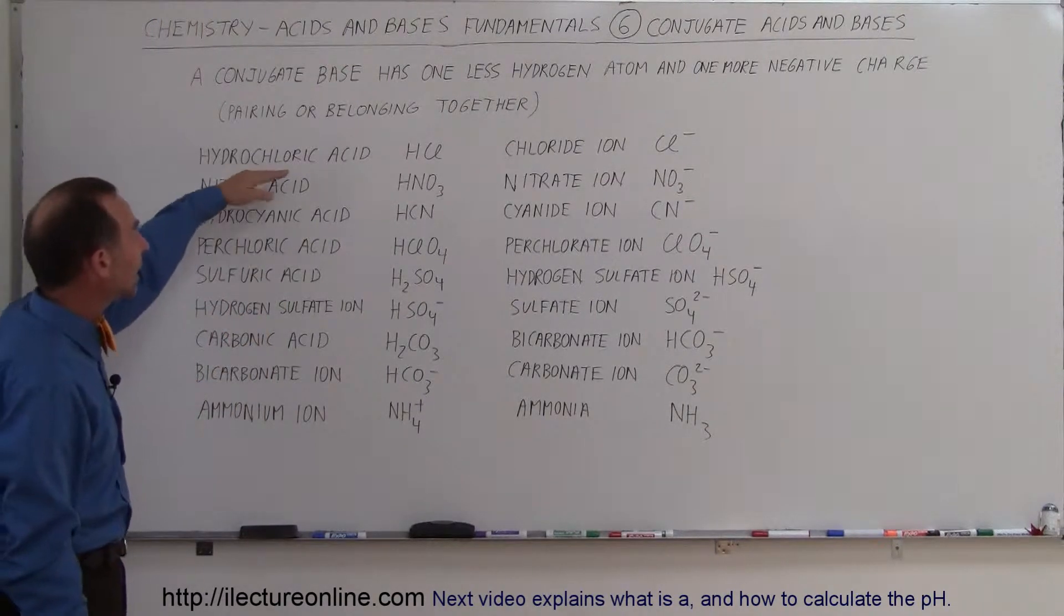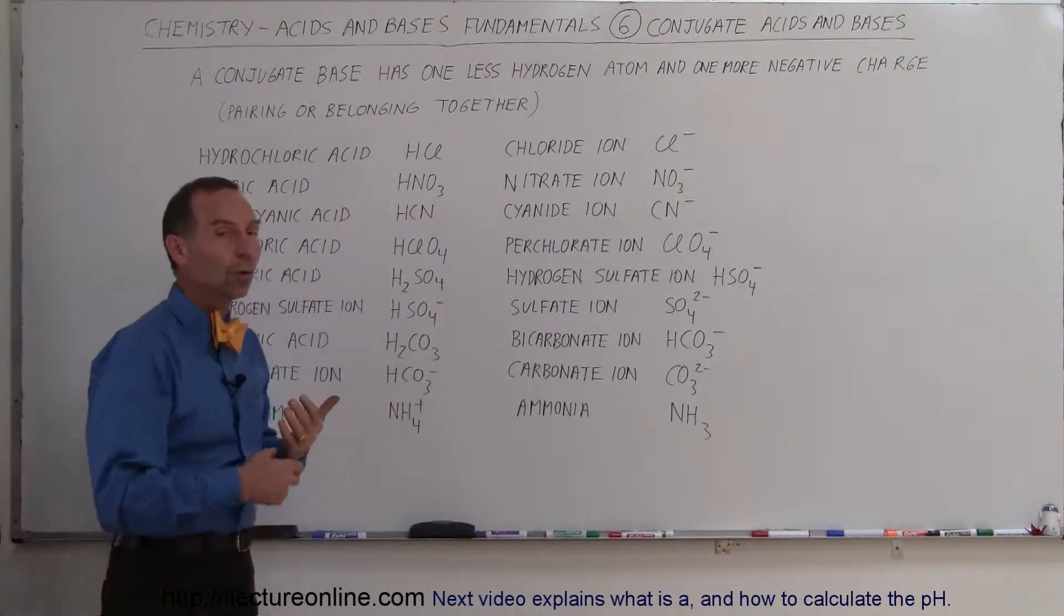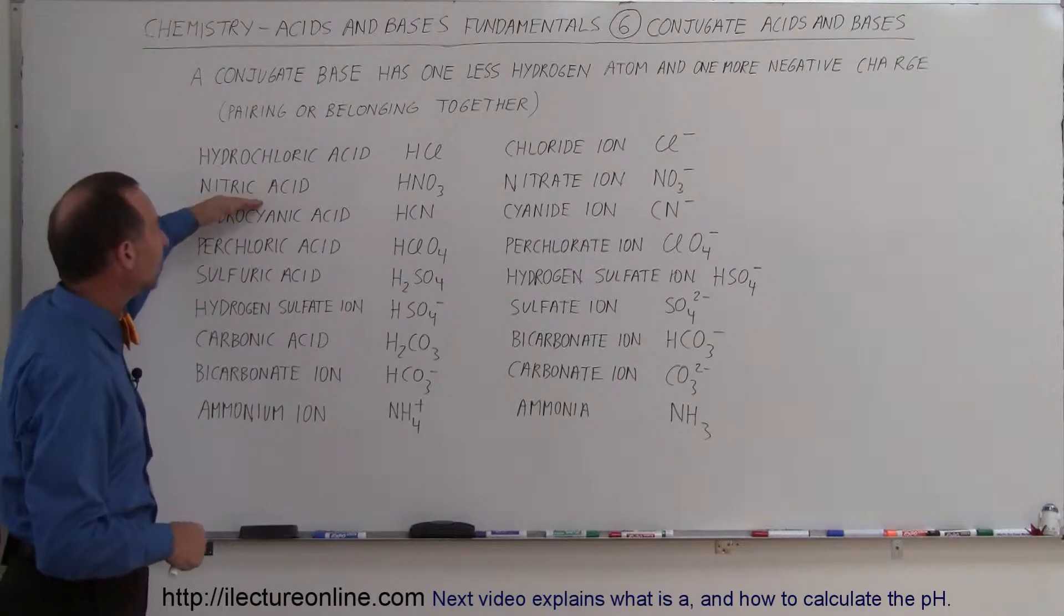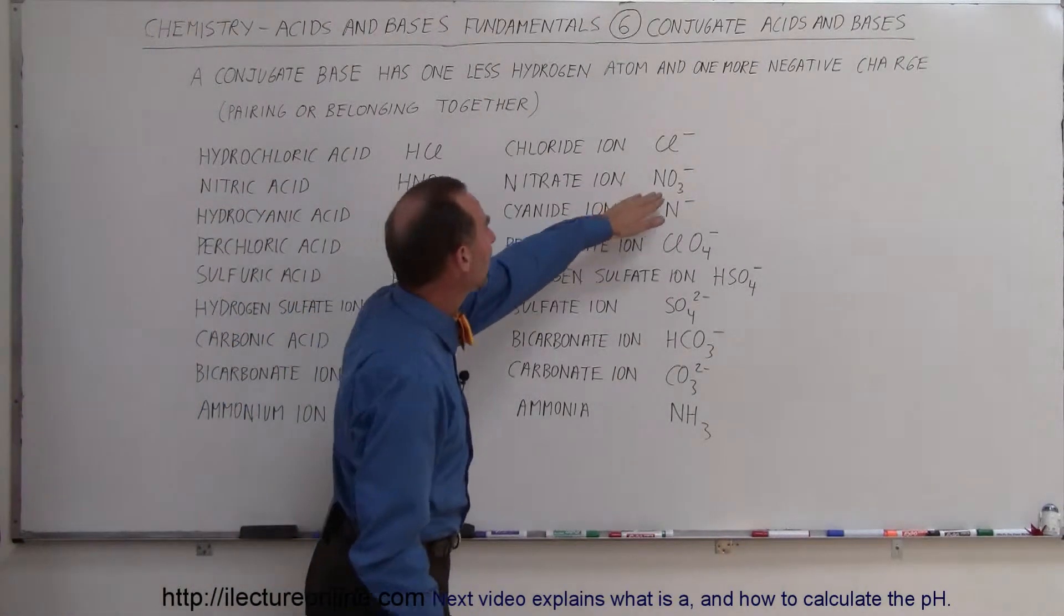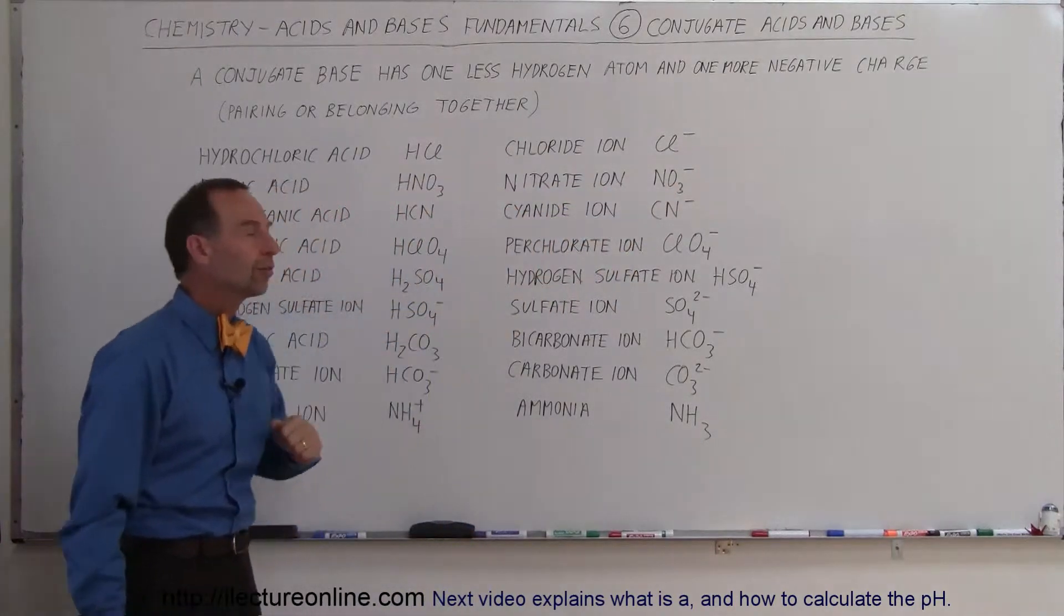For hydrochloric acid, HCl, the conjugate base is chlorine ion, so one less hydrogen, one more negative charge. For nitric acid, we have HNO3. The H goes away, we end up with NO3-, so that's the nitrate ion, so one more negative charge, one less hydrogen ion.